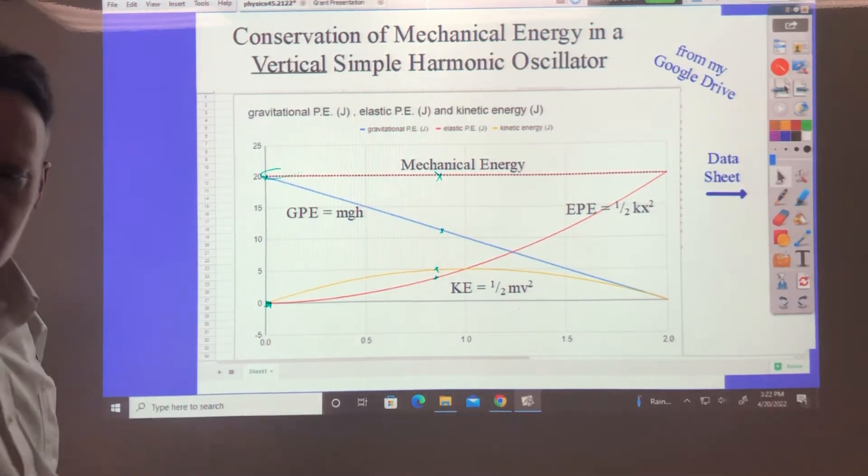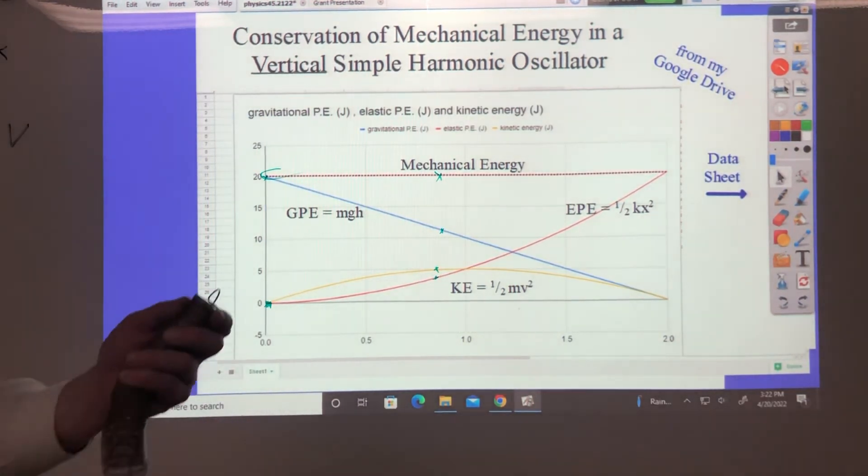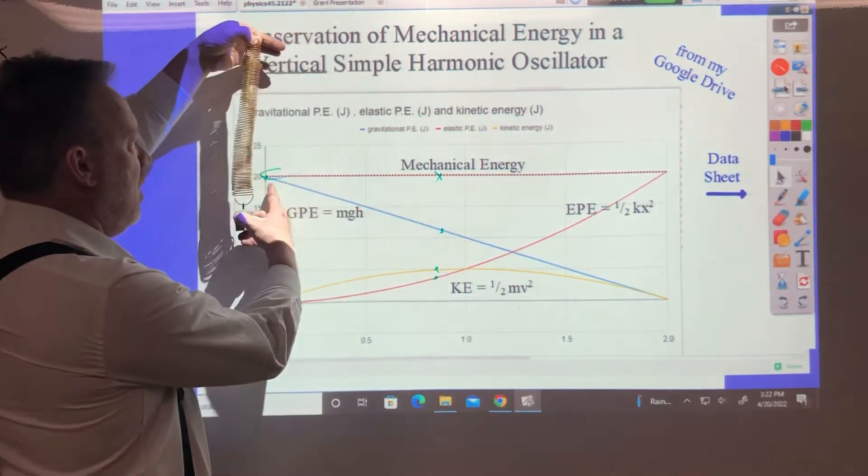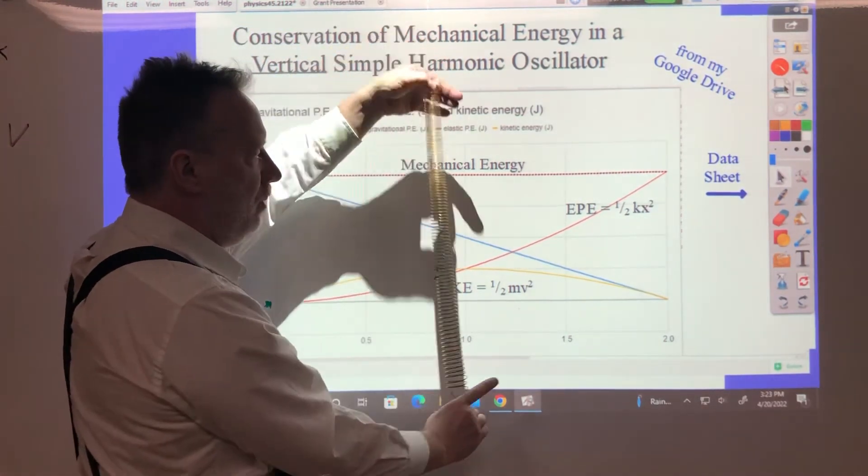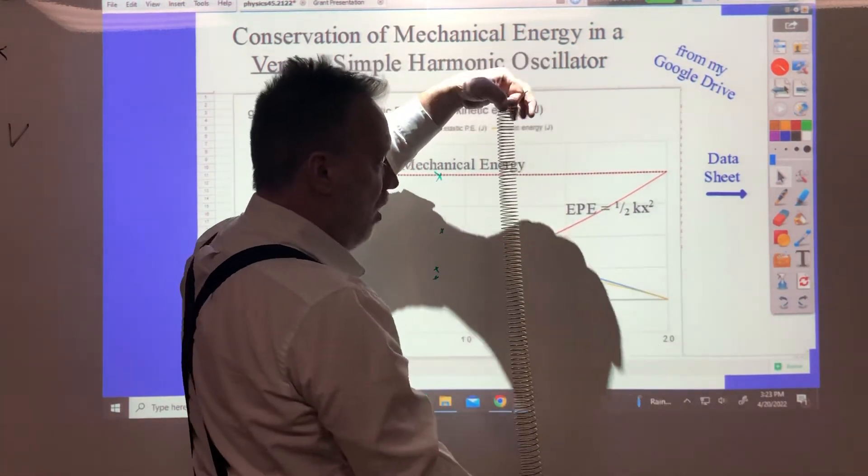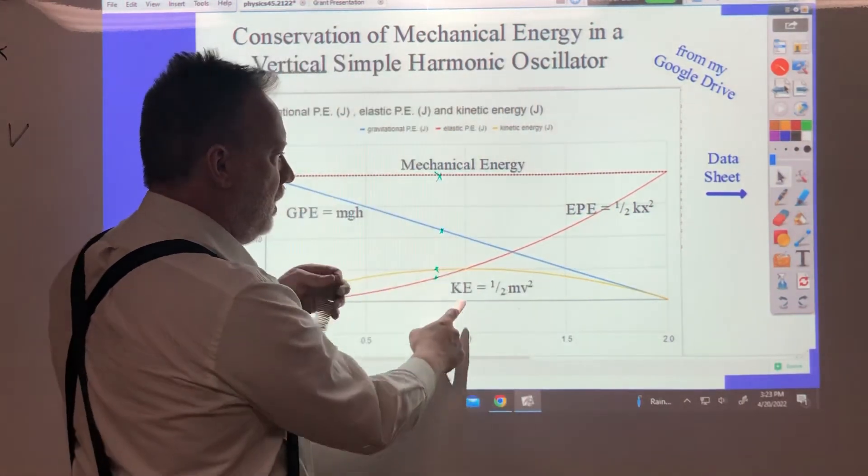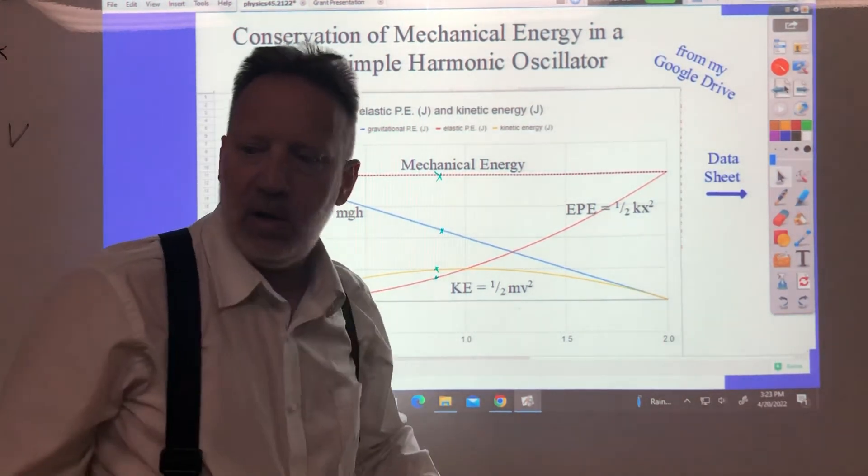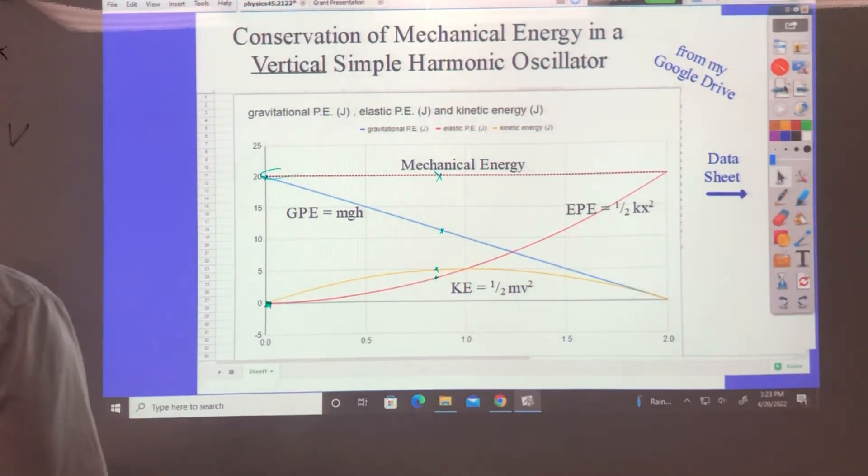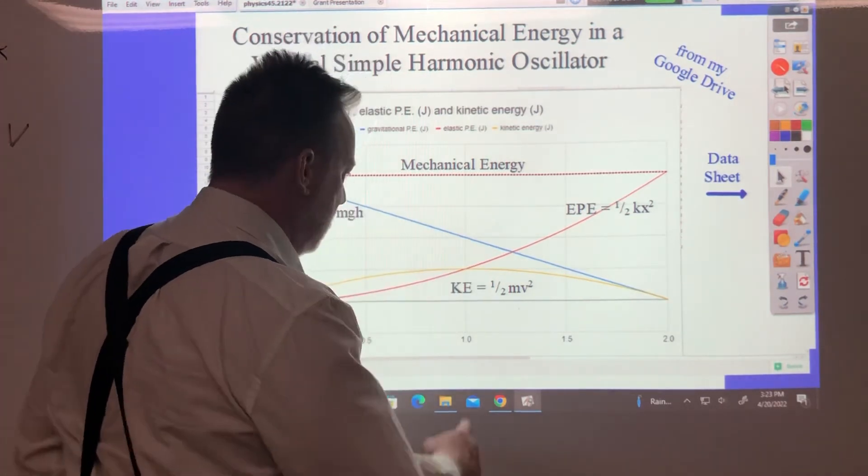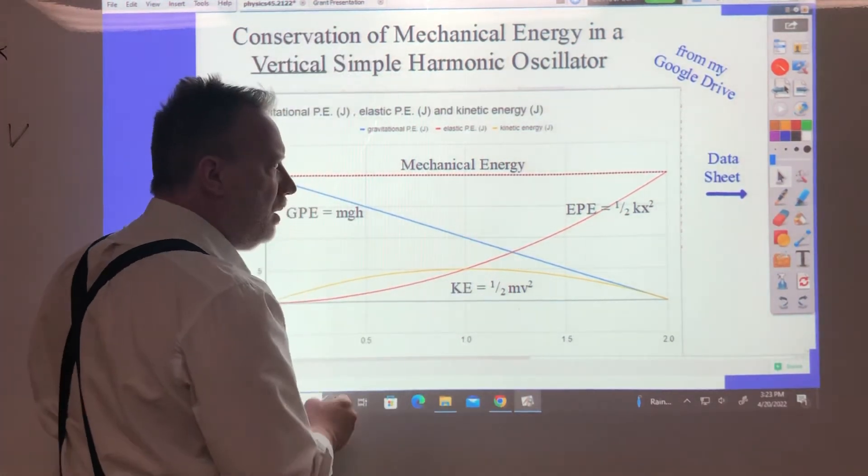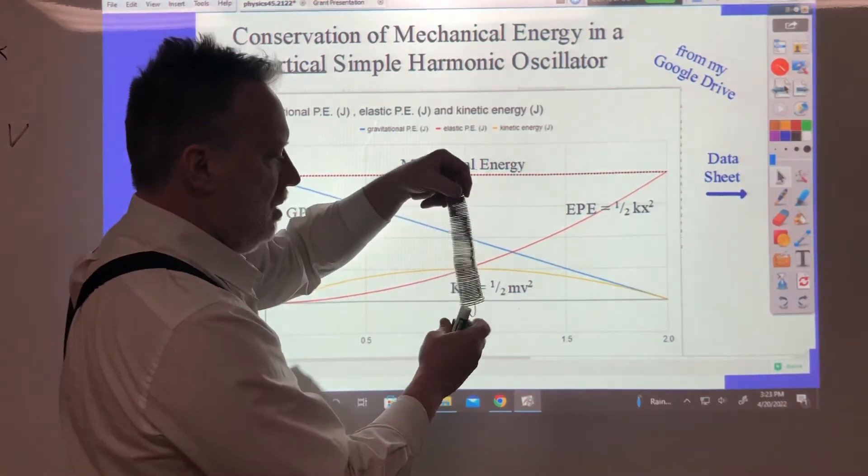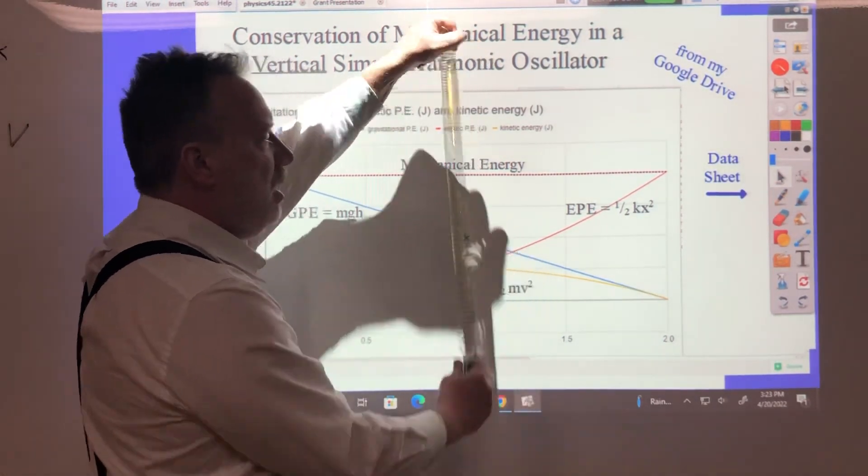As it goes up and down, your gravitational potential energy at the top is all mechanical, twenty joules. At the bottom down at the ground it's all elastic. In the middle a lot of it's kinetic energy, but it's not all kinetic energy as you would think. In the middle, half of it's GPE.